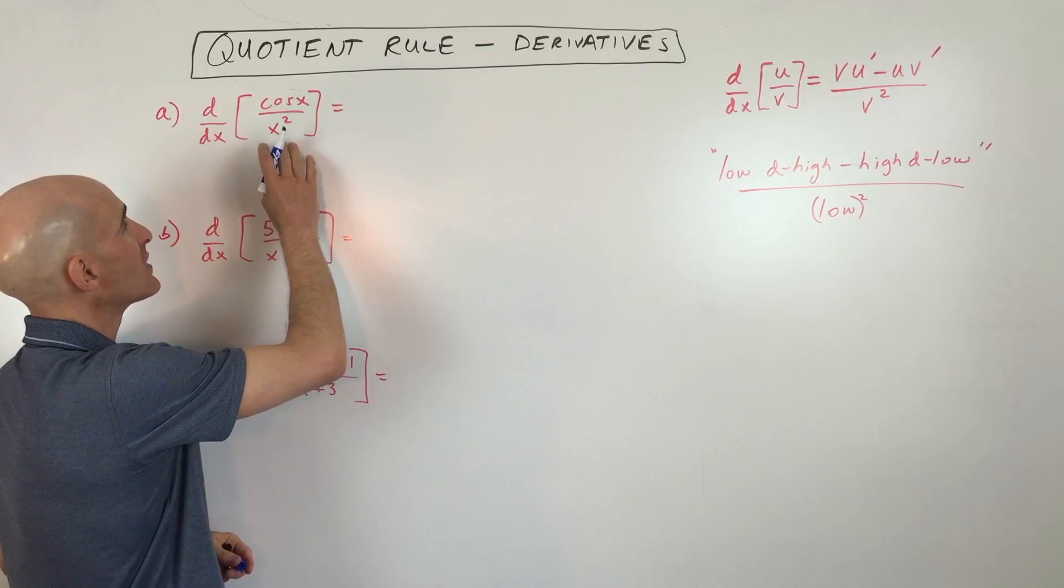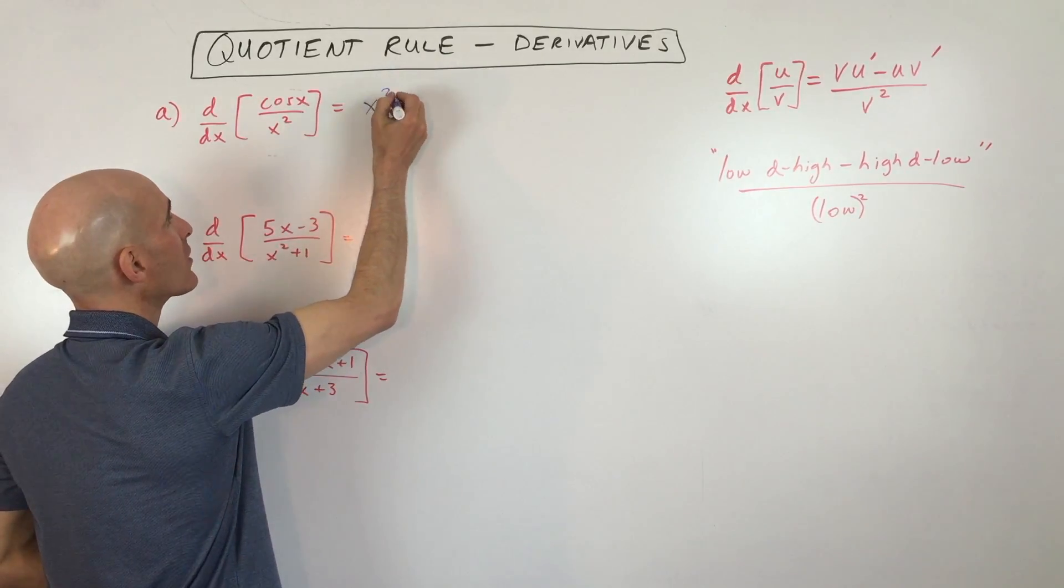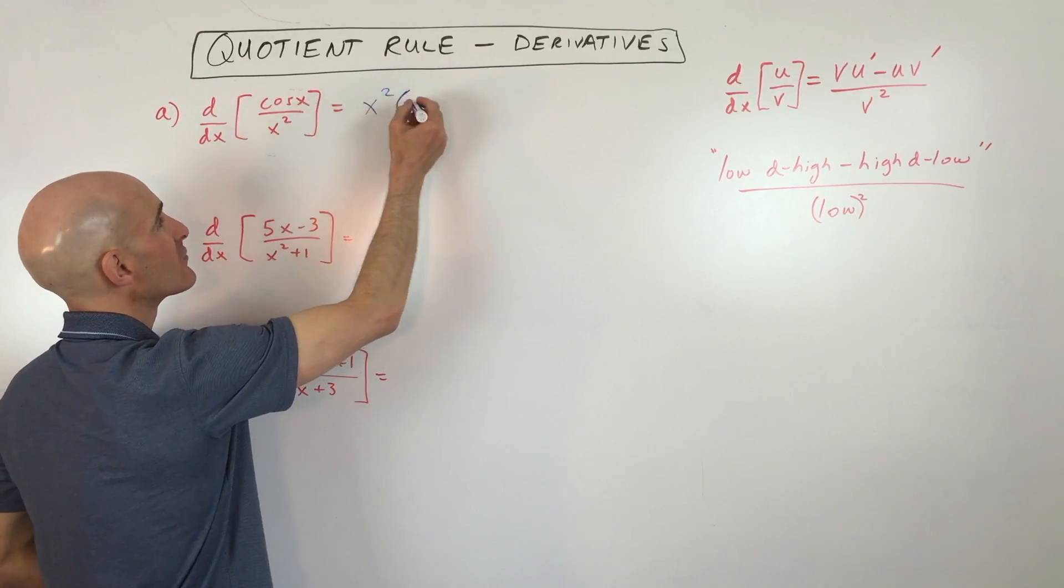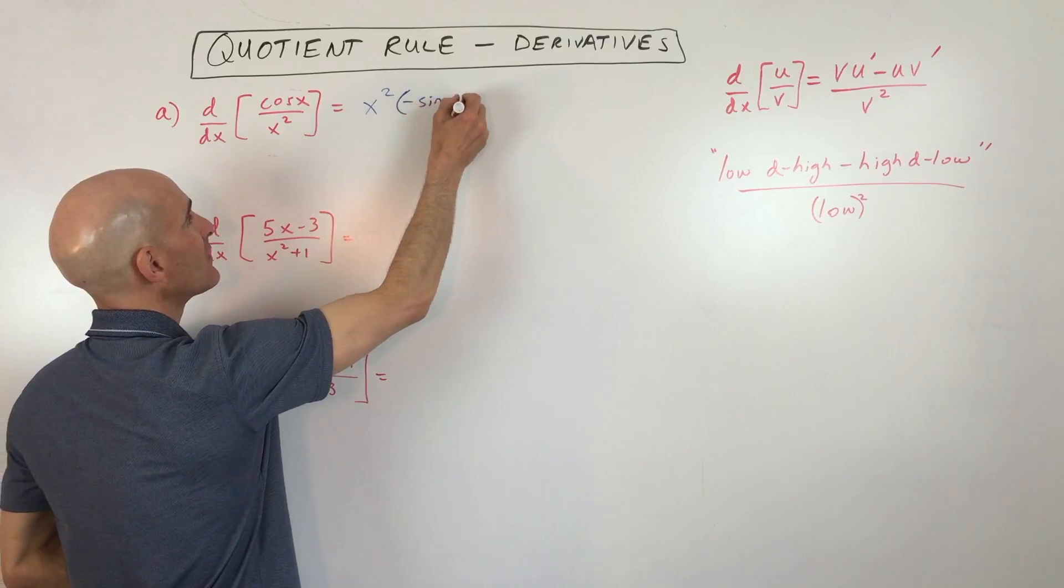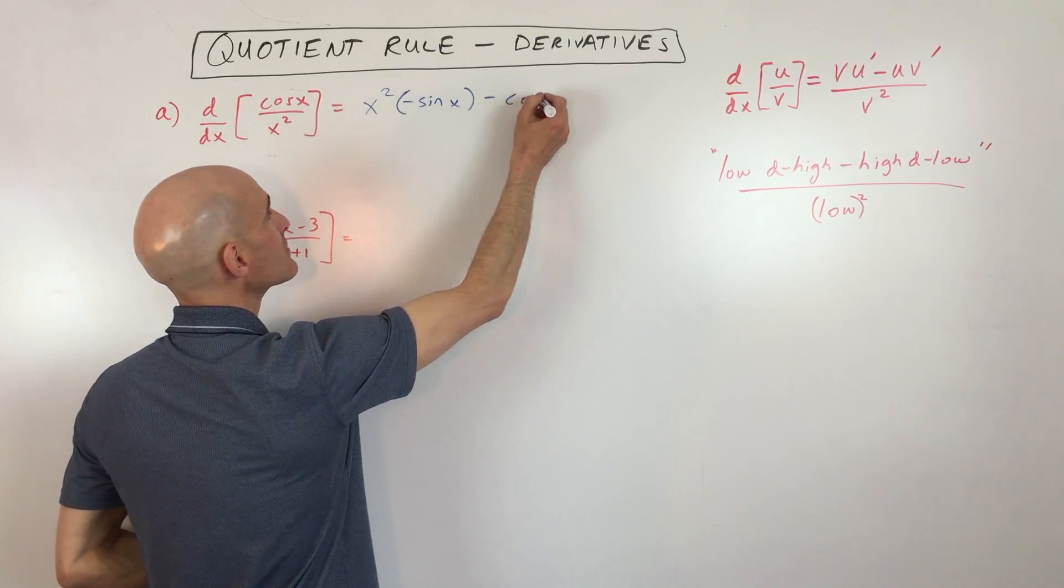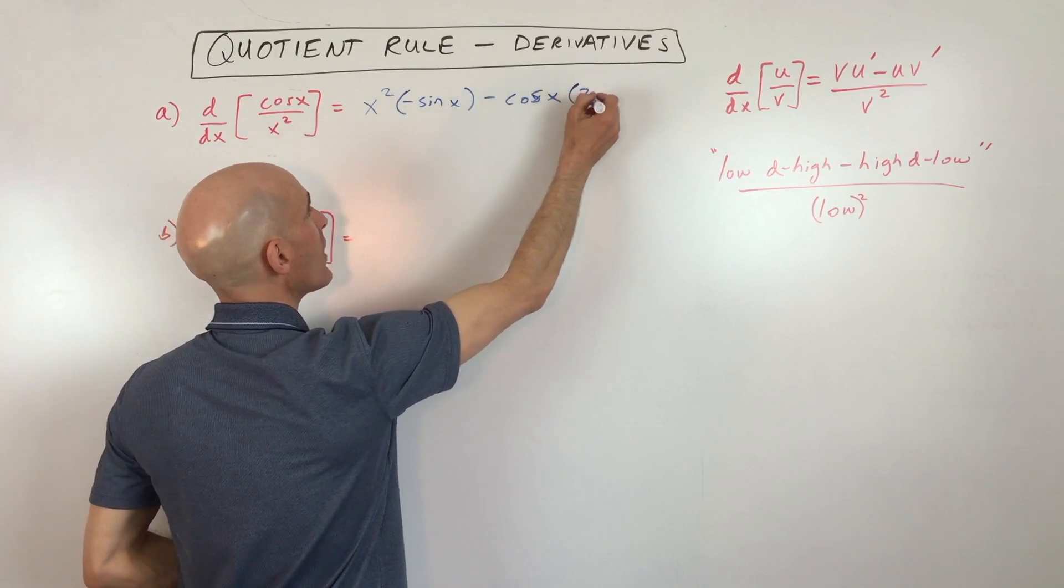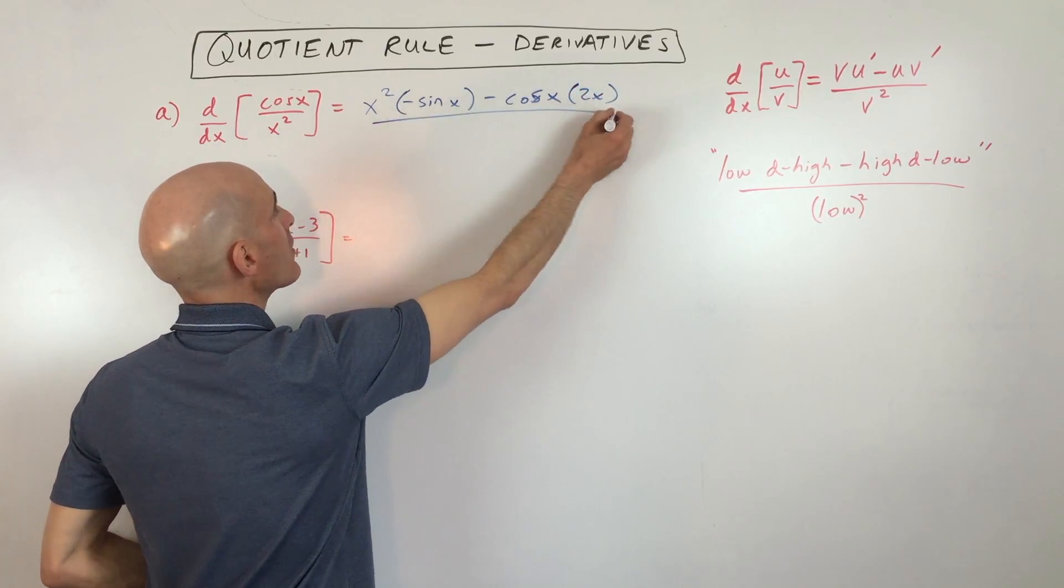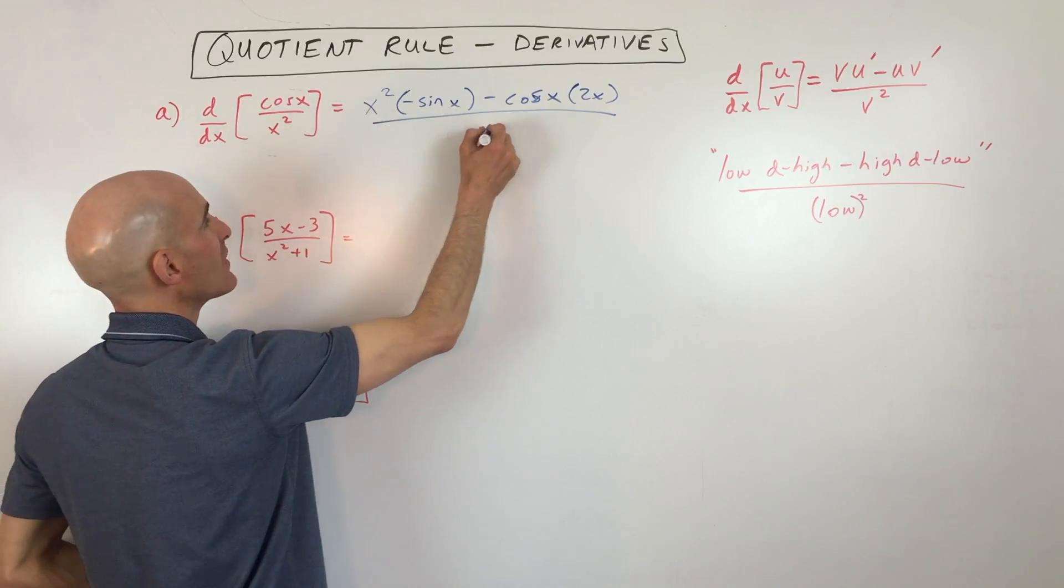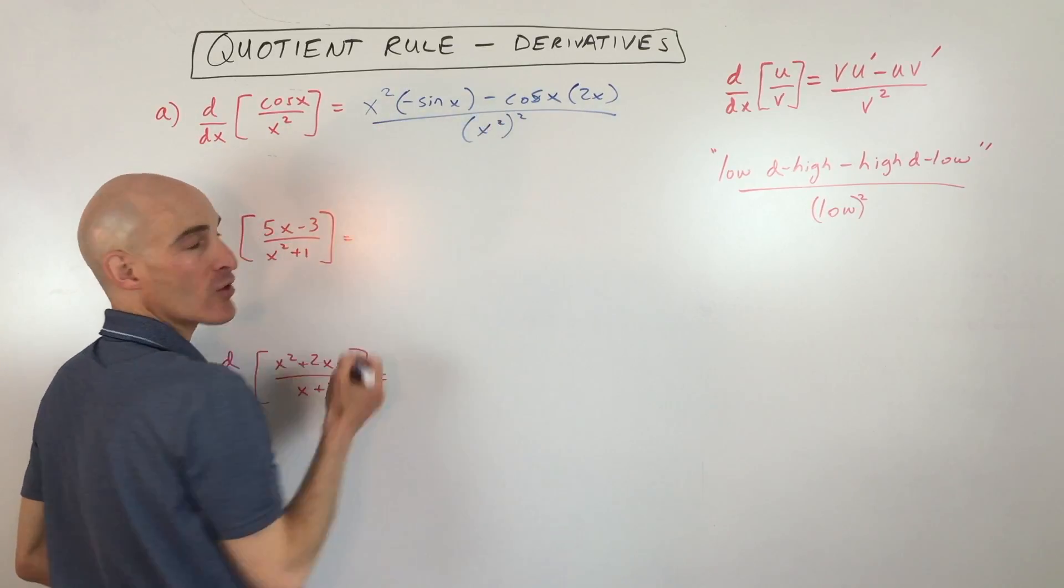So what you would do is you'd say, okay, low, x squared, D high, that's the derivative of cosine, which is negative sine, minus high, that's cosine of x, cosine x, D low, derivative of x squared is 2x, over the square of what's below. So that's going to be x squared, squared, or x to the fourth.